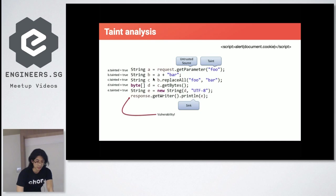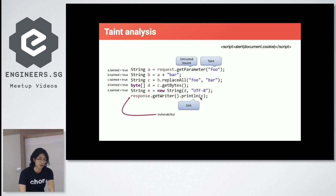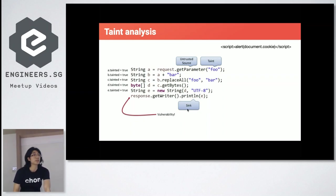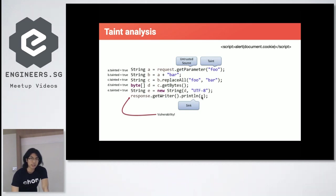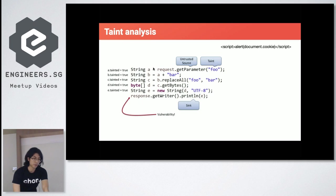Through a series of assignments — B equals A, C equals B, D equals C, E equals something involving D — you move on to the sink, which writes E to the browser. Taint analysis evaluates whether variable E is tainted by anything that can be input by the user. E is tainted by D because of this method, D is tainted by C, and tracing back you reach A. The user's input A directly affects output E — that's how cross-site scripting is enabled.